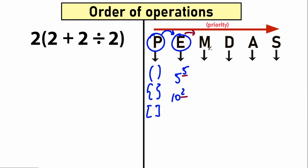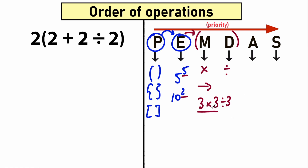After exponents we move to the next step: multiplication. M stands for multiplication, D stands for division. These form one common group — don't forget it. It doesn't work by always multiplying first then dividing. Instead, we perform them in a strict order from left to right. For example, with 3 times 3 divided by 3, multiplication comes first from left to right, so 3 times 3 equals 9. But in reverse — 3 divided by 3 times 3 — division comes first. Whenever we have a mixture of multiplication and division, perform it left to right. Multiplication and division are tied for priority.